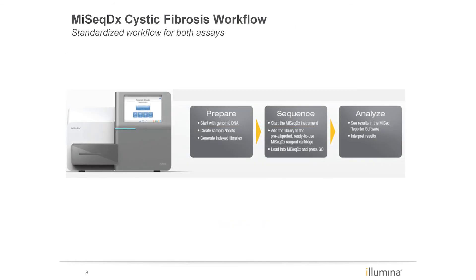The MiSeq Cystic Fibrosis workflow is as easy as 1, 2, 3. This workflow is standardized so that each CF assay follows the same procedural steps. The workflow starts with genomic DNA, and samples are prepared for sequencing through the library preparation steps. At the conclusion of library prep, the user loads the single pooled sample onto the MiSeq DX reagent cartridge, and sequencing is automatically executed. At the conclusion of sequencing, an assay report is generated for easy user interpretation.